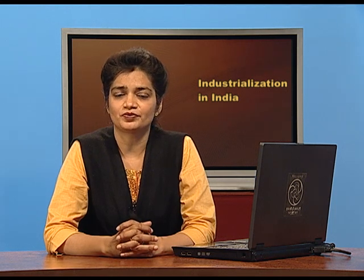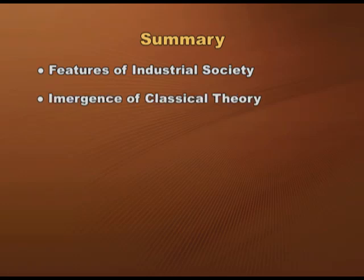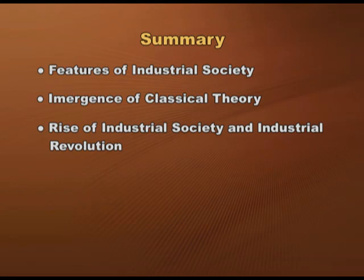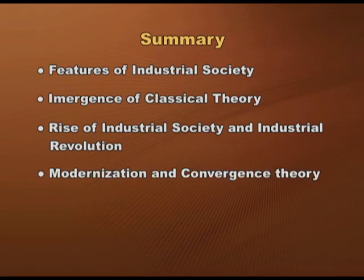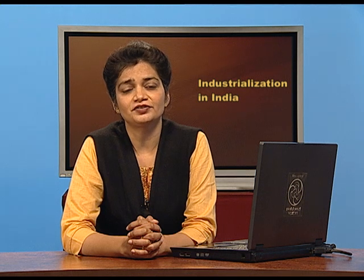To conclude, we started our discussion with the features of industrial societies and the emergence of classical theories of social change around revolutions in Europe — Enlightenment, Industrial Revolution, and French Revolution. We contrasted classical theories with contemporary perspectives, particularly modernization and convergence theory. Both share the view that the world will eventually become similar, yet inequalities persist at the global, national, local, and community levels. Industrial societies are considered homogeneous, yet deeper examination reveals different forms of stratification and divisions. In the next part, we will discuss industrialization in India, particularly after independence.